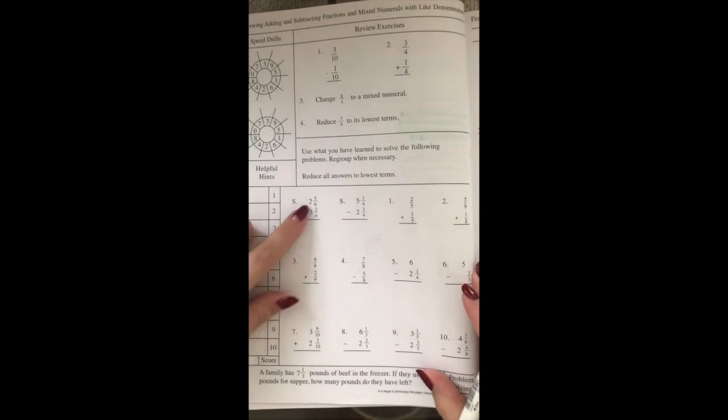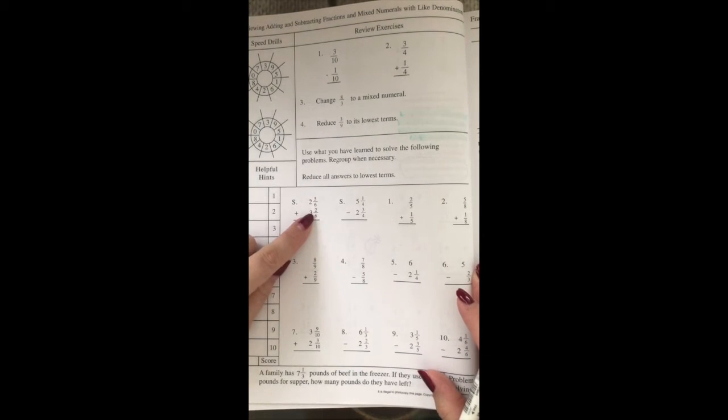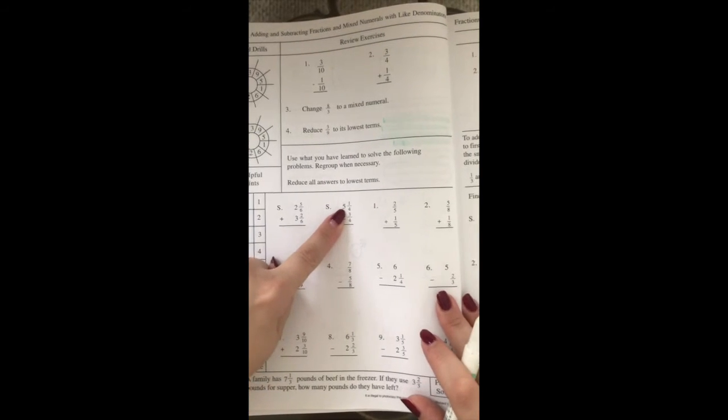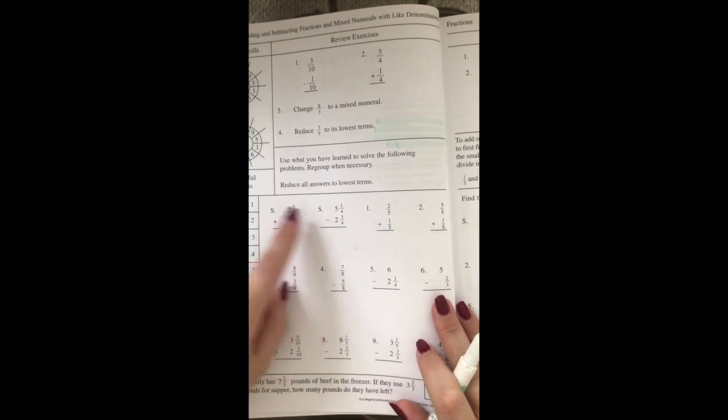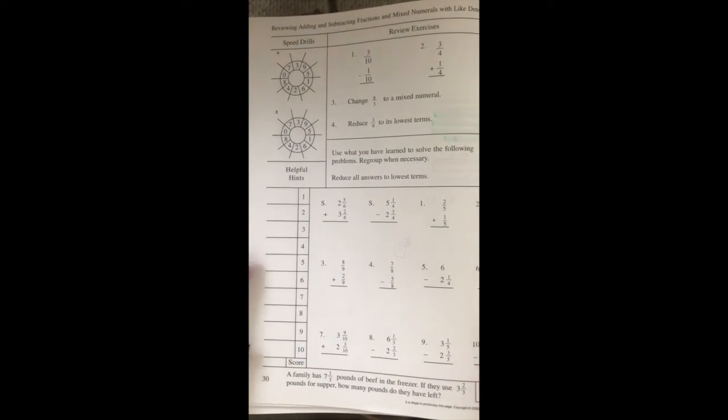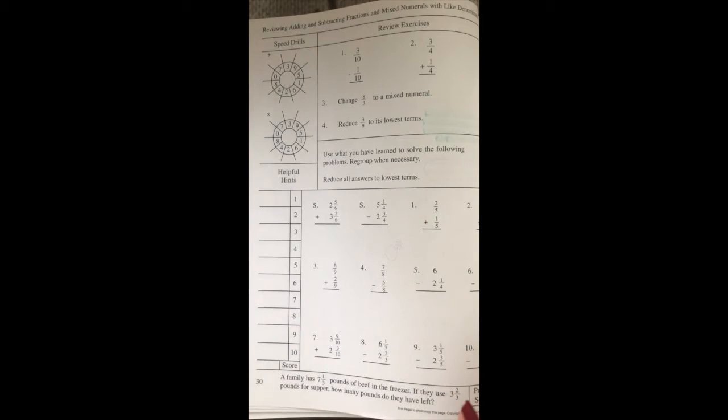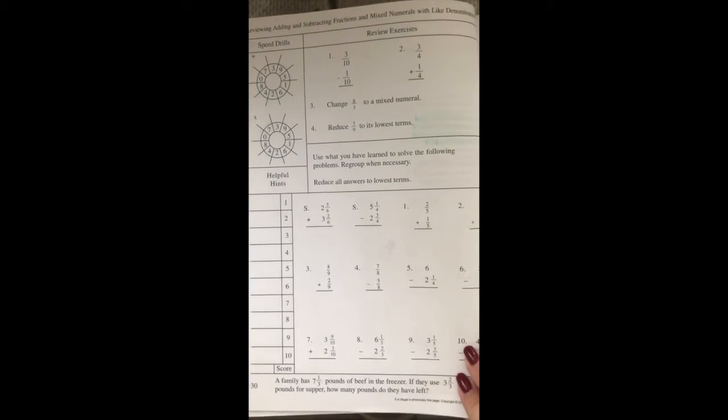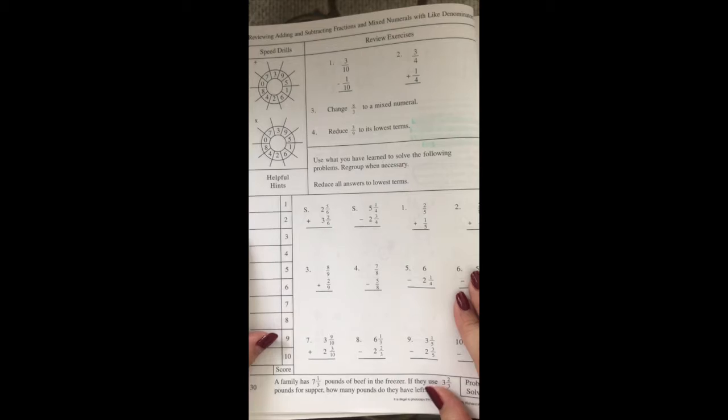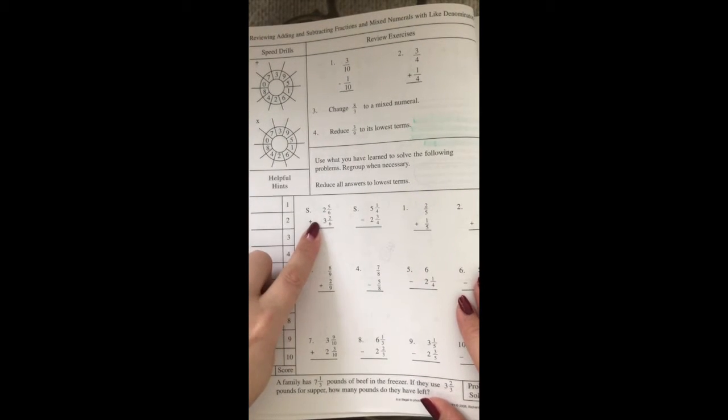But pretty much for all of them, you focus on the fractions first. You either add or subtract fractions first. If it's subtraction, sometimes you may have to borrow from the number. Take a look at your symbols, make sure you know whether you're adding or subtracting, and start with your fractions before you go to your mixed number.